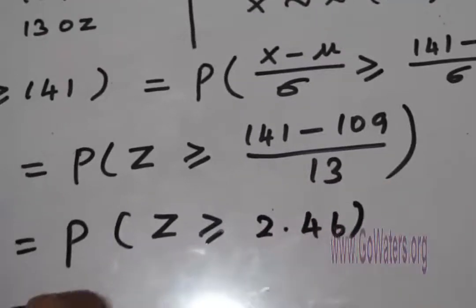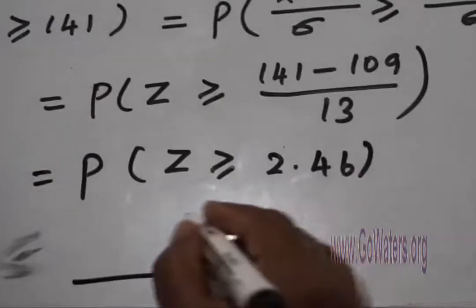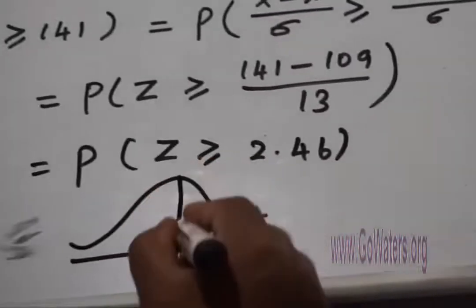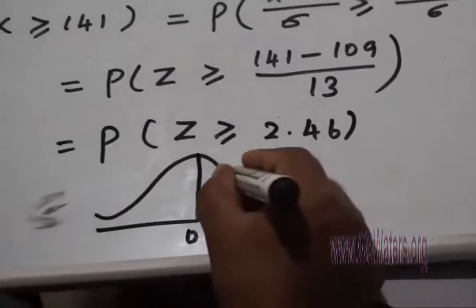I can draw a diagram for this. The area that I'm interested in here—this is the Z axis, right.